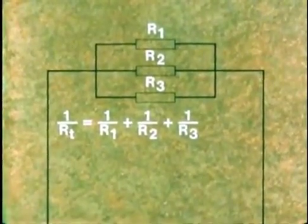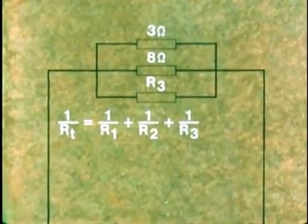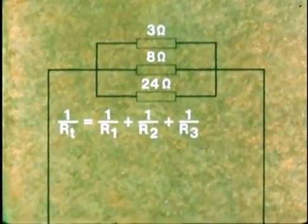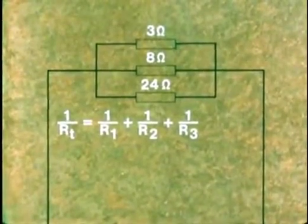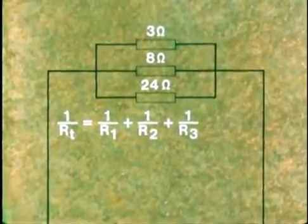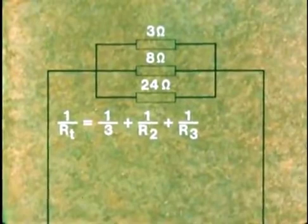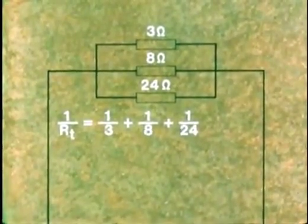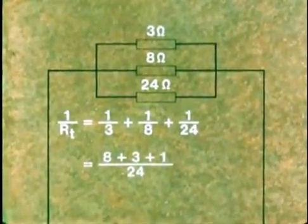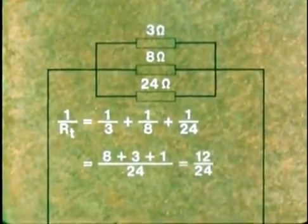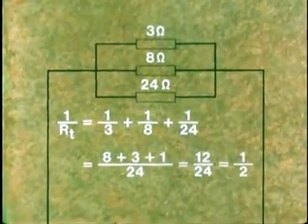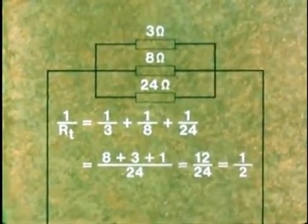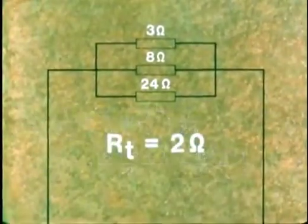Now suppose the resistors are 3, 8, and 24 ohms, as we had before in the series circuit. Then 1 over RT equals 1 over 3 plus 1 over 8 plus 1 over 24. Simple arithmetic now shows us that 1 over RT is equal to 1 over 2. So by inverting, RT in the parallel case equals 2 ohms.